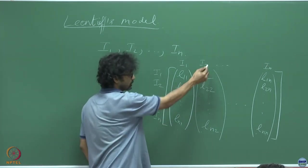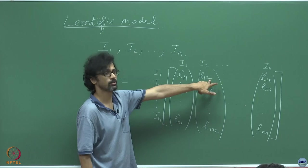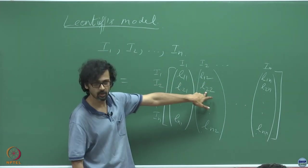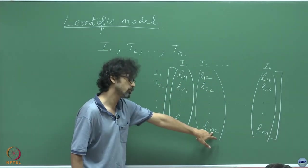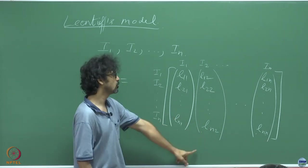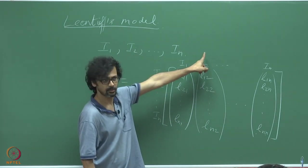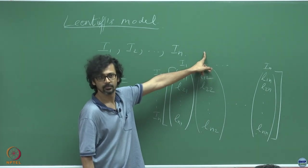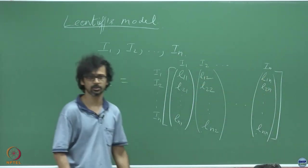Similarly, industry two requires L₁₂ units of industry one's output, L₂₂ units of its own output, and so on until Lₙ₂ units of industry n's output to manufacture one unit of its own product. This is the basic description.